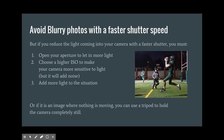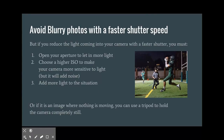Those were solutions outside your camera, but here are solutions using your camera settings. To avoid blurry photos, use a faster shutter speed — but that lets in less light, so you need to open up your aperture to let in more light. That creates shallower depth of field, but that's okay in many situations. You may also need to choose a higher ISO to make your camera more sensitive to light, though it will likely add more noise.